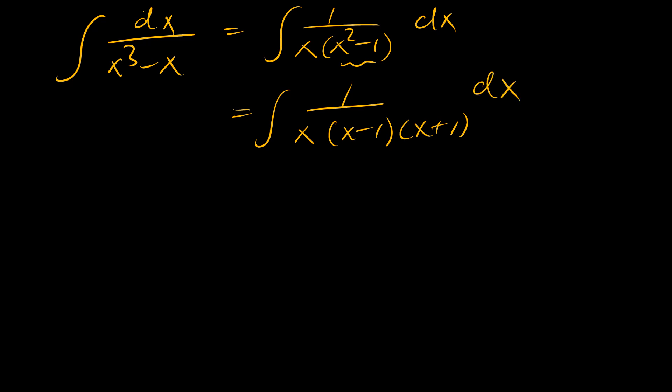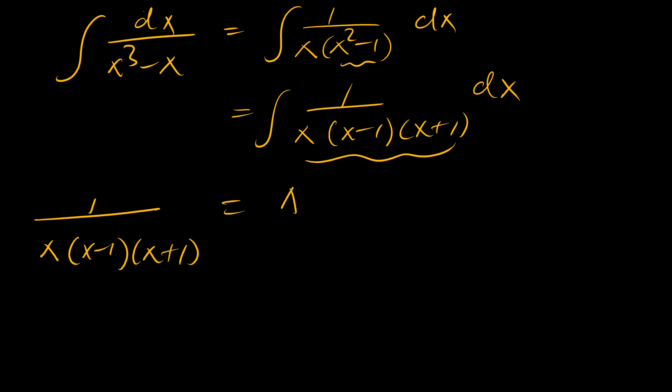We can do this easily by expressing the integrand in partial fraction form: A over x, plus B over (x minus 1), plus C over (x plus 1).